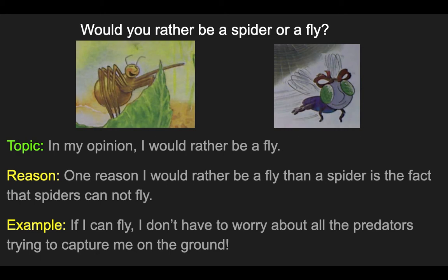Let's look at an example. Would you rather be a spider or a fly? Here's the topic sentence: In my opinion, I would rather be a fly. Now look at the reason: One reason I would rather be a fly than a spider is the fact that spiders cannot fly. Then we have our example: If I can fly, I don't have to worry about all the predators trying to capture me on the ground.